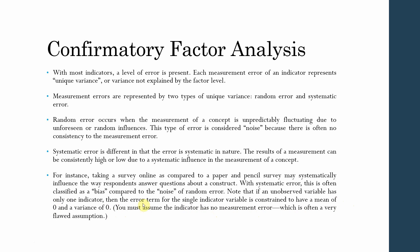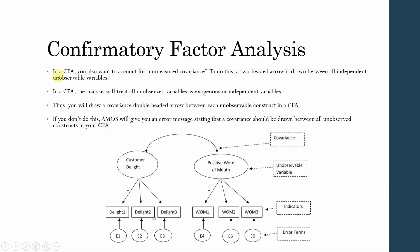In confirmatory factor analysis you also want to account for unmeasured covariance. To do this, you need a double-headed arrow drawn between all the unobserved variables. In CFA, the analysis treats all unobserved variables as exogenous or independent variables, so you draw a covariance or double-headed arrow between all your unobservable constructs. If you don't do this, AMOS will give you an error message.